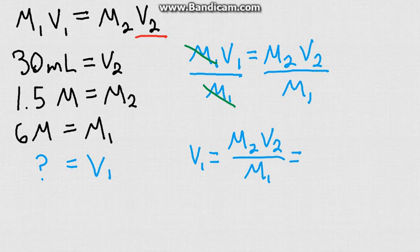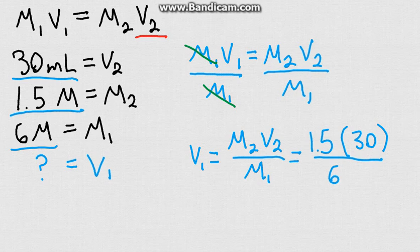If we plug in these numbers, we will get M2 is 1.5, V2 is 30 milliliters. And as long as you keep your units constant, you don't have to switch into standard units. So I'm just going to leave this as 30. And then we're going to divide by M1, which is our 6 molar solution. And that should give us our answer if we just plug that into our calculator.